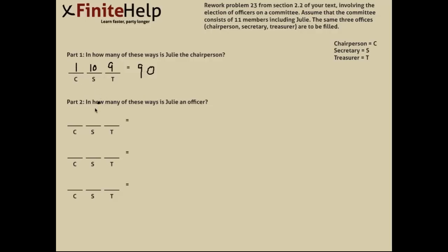Moving on to Part 2, well, we know there are three officer positions—chairperson, secretary, and treasurer. For this part, we do the same thing we did in Part 1, only we do it for every officer position. So, we'll go ahead and redo Part 1. Select Julie as the chairperson. And then 10, then 9, gives you 90.